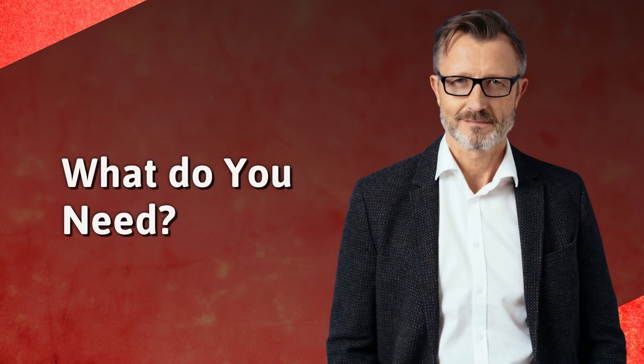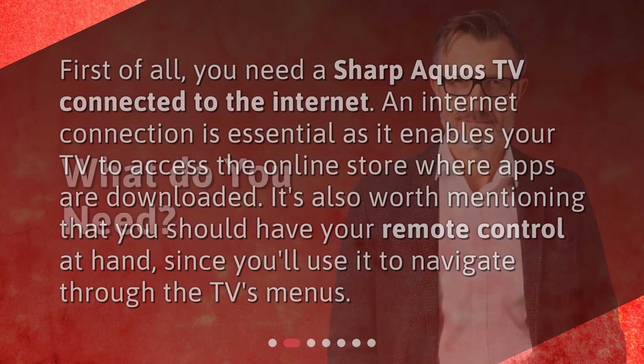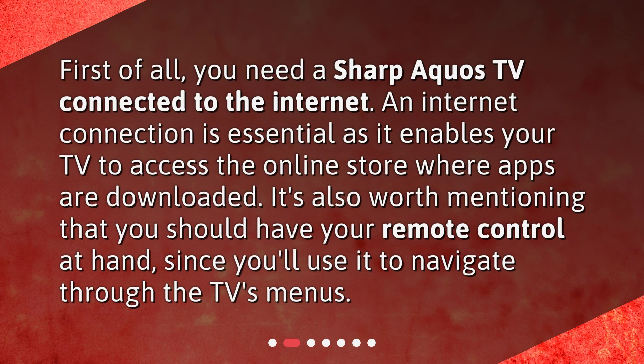What do you need? First of all, you need a Sharp Aquos TV connected to the internet. An internet connection is essential as it enables your TV to access the online store where apps are downloaded. It's also worth mentioning that you should have your remote control at hand, since you'll use it to navigate through the TV's menus.